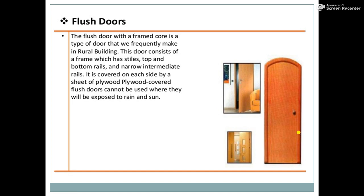The next type is the flush door. The flush door is a framed door, a type frequently made in rural buildings. It consists of a frame with stiles, top and bottom rails, and narrow intermediate rails, covered on each side by a sheet of plywood. Plywood-covered flush doors cannot be used where they will be exposed to rain or sun, as they may be damaged by rainwater and heat.